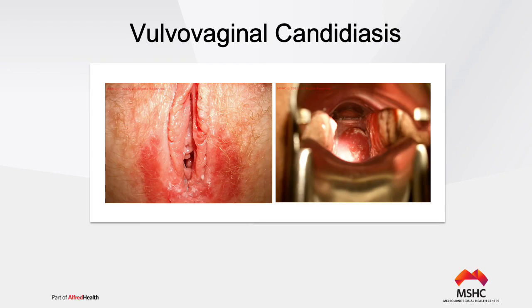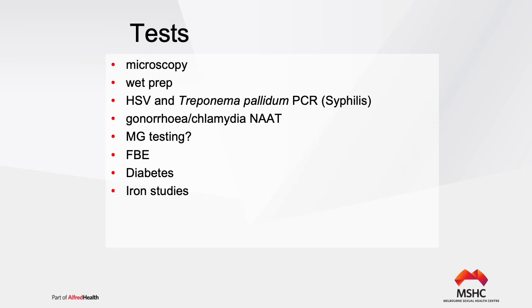There is significant redness around the introitus with fissuring noted. When the speculum is passed, you can see frothy, thick cottage cheese-like discharge covering the vaginal walls and cervix. This is vulvo-vaginal candidiasis.